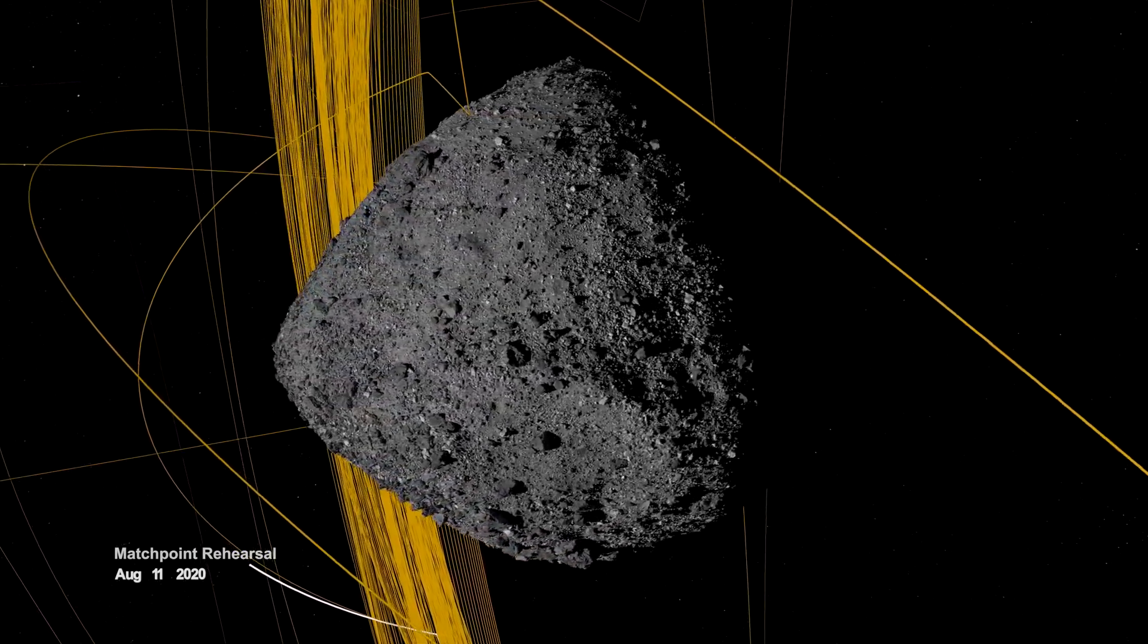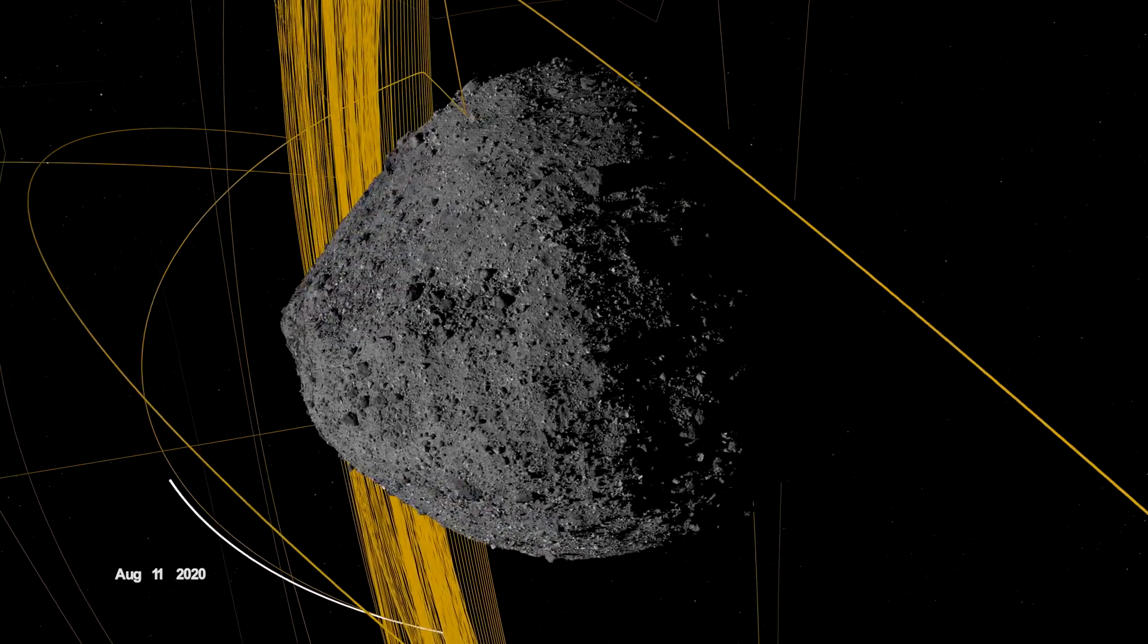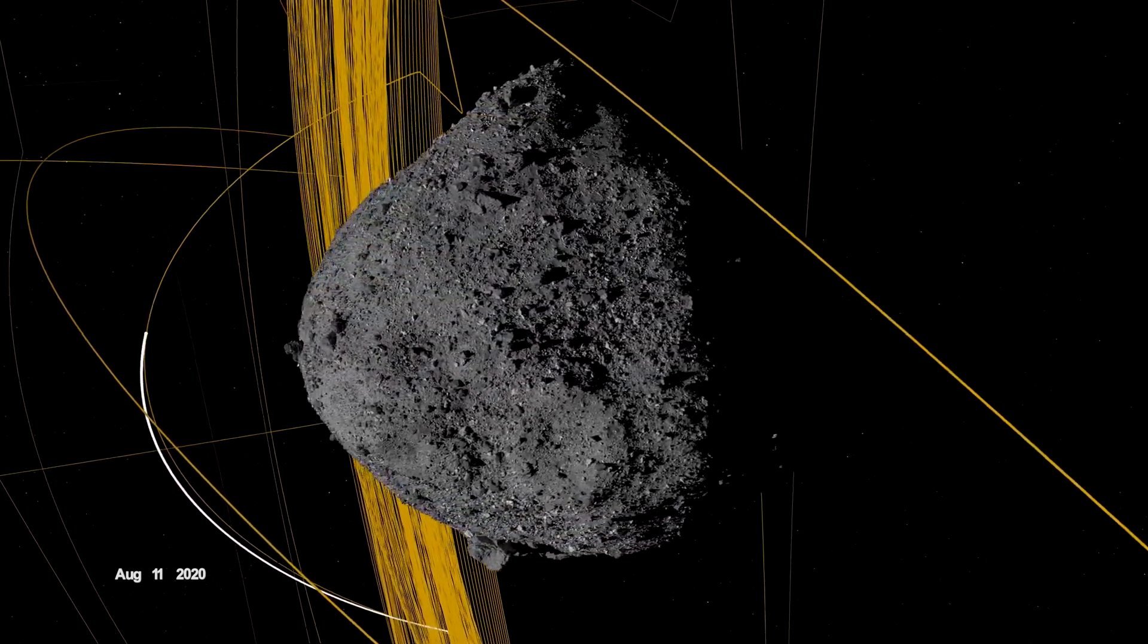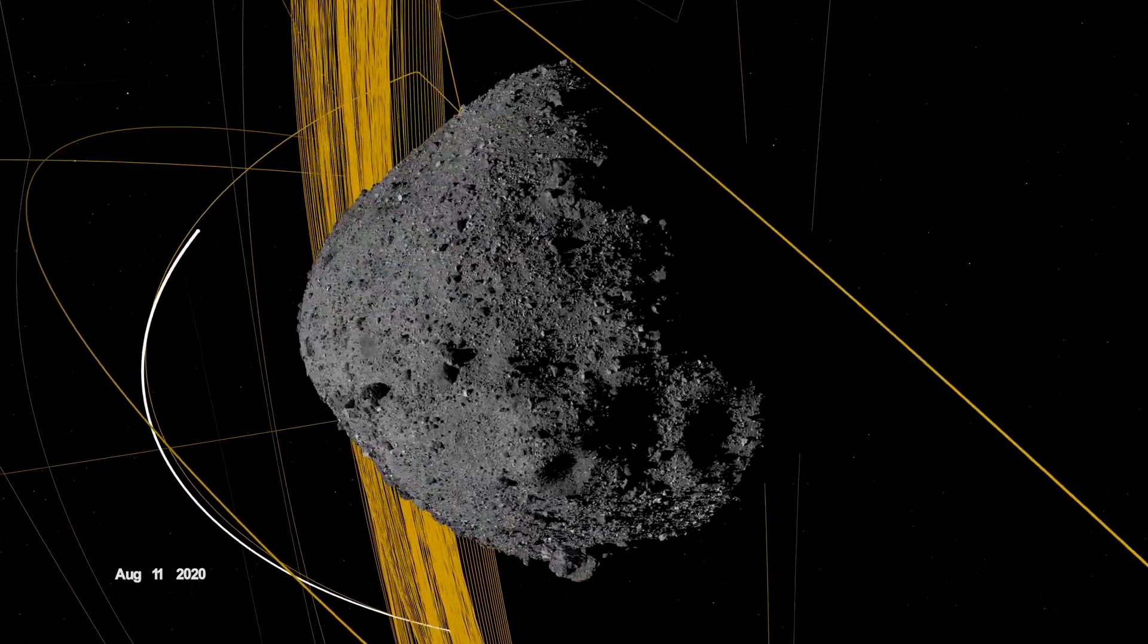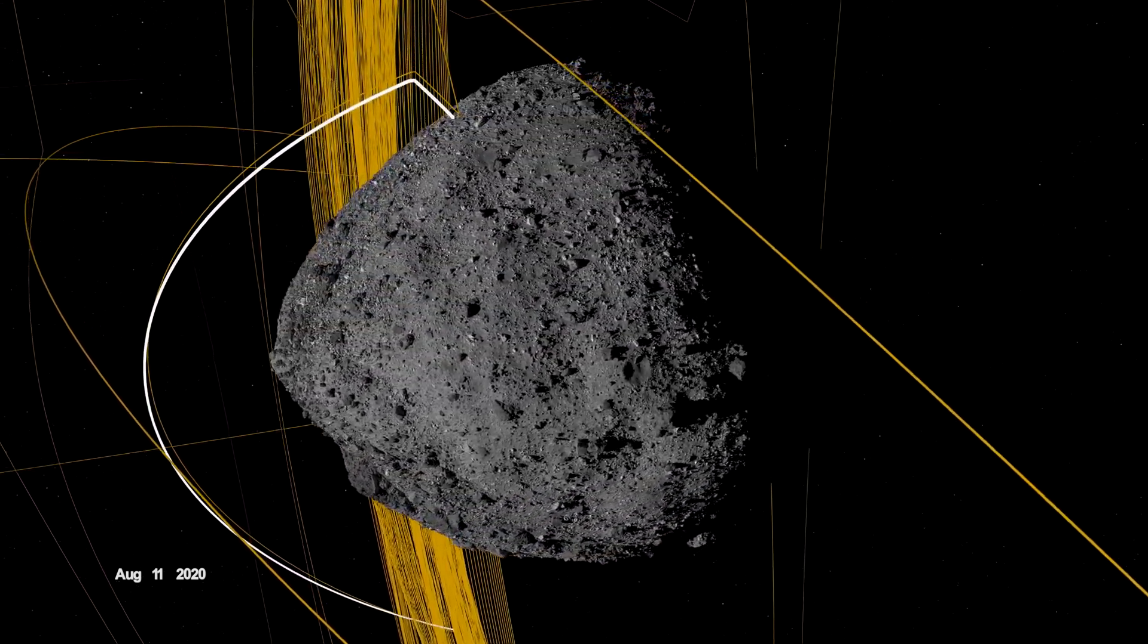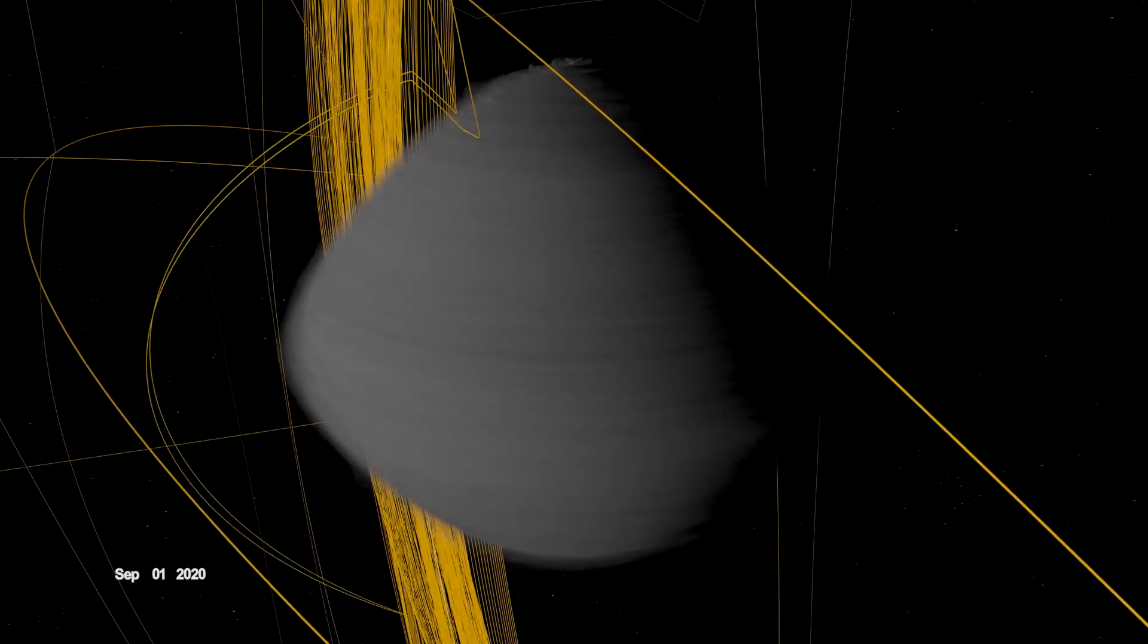On August 11th, OSIRIS-REx departed its home orbit and made a four-hour traverse to Bennu's northern hemisphere, retracing its earlier path. After performing the checkpoint engine burn to begin its descent, it made a second engine burn called Matchpoint to match Bennu's rotation before backing away at an altitude of approximately 40 meters.